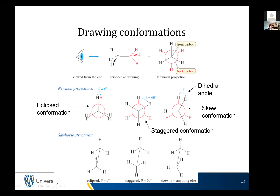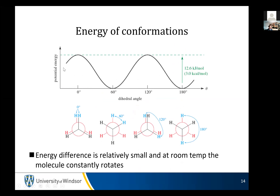Anything between zero and 60 degrees is called a skew conformation — not the lowest possible, not the highest. Drawing this as a potential energy diagram — potential energy as a function of dihedral angle — at zero degrees you're eclipsed, which is the worst possible conformation with the highest potential energy. As the angle increases to 60 degrees, you hit the lowest potential energy. Increasing to 120 degrees, you're eclipsed again because different hydrogens now overlap.